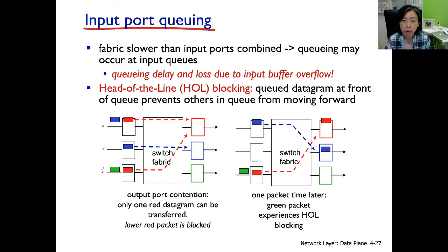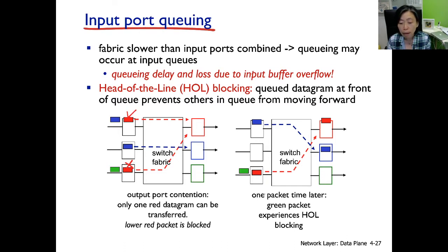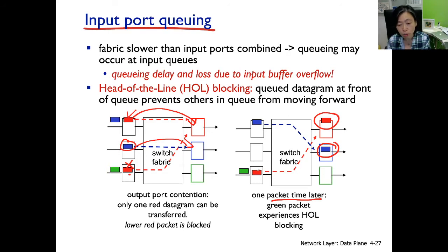There are three input ports. Input port one has a red packet at the front, and input port three also has a red packet at the front. Since this is an output port contention-based router, we can only pick one of these to go to the output port. Let's assume one goes through and the other gets blocked. One packet time later, that red packet arrives at the output port, the blue packet arrives at the blue port, but the blocked red packet stays in the queue.